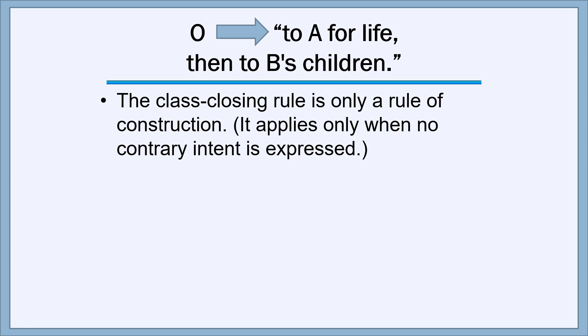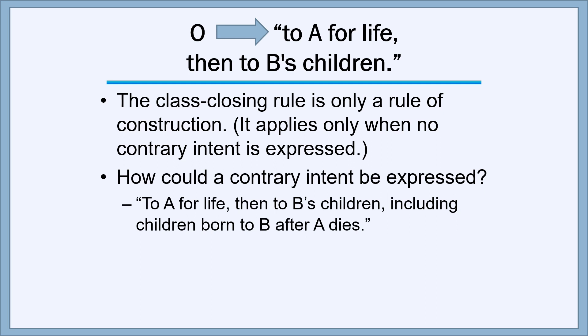The class closing rule is only a rule of construction — it applies only when there's no contrary intent expressed by the grantor. How could a contrary intent be expressed? Here's an example: 'to A for life, then to B's children, including children born to B after A dies.' Here the grantor has expressly said that later-born members of the class are entitled to take their shares. This is more inconvenient to the existing class members but better for later-born children. Otherwise, we use the standard class closing rule and close the class when we give it possession of the land.